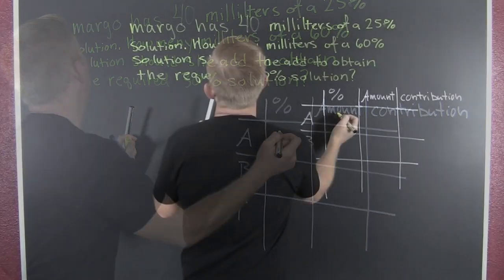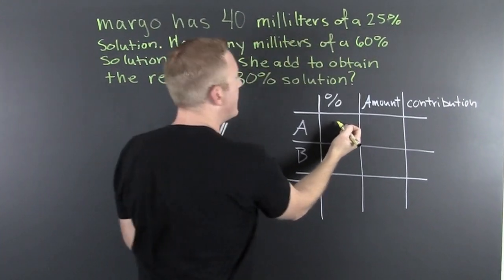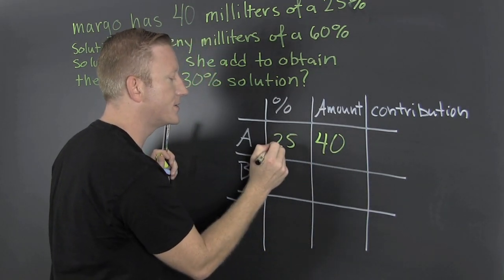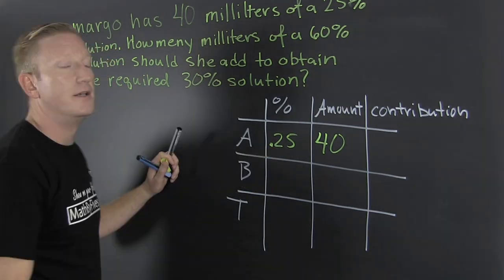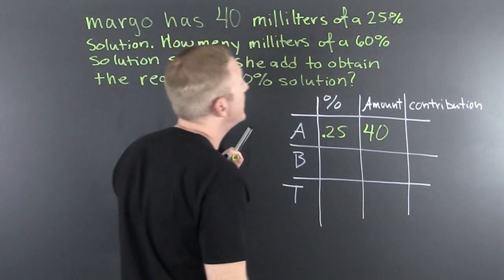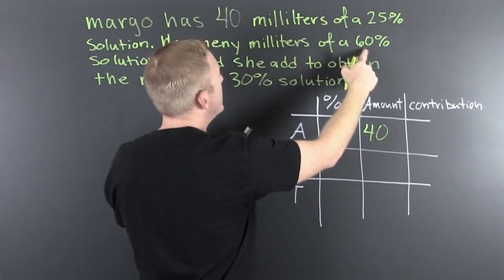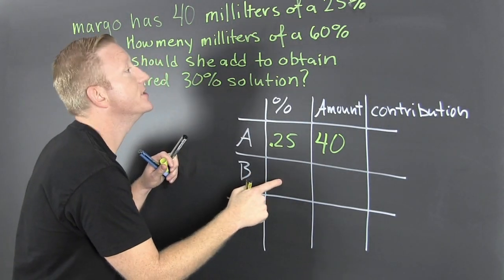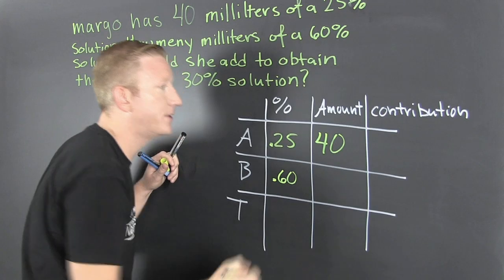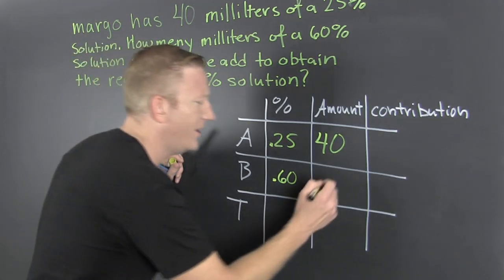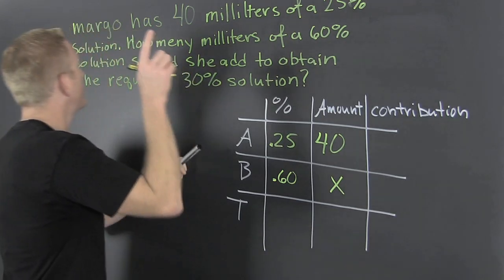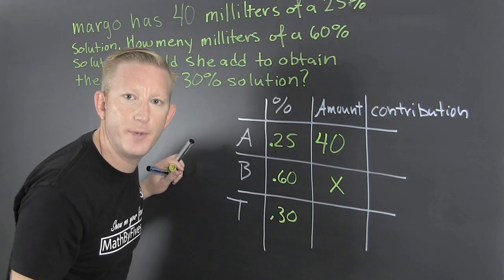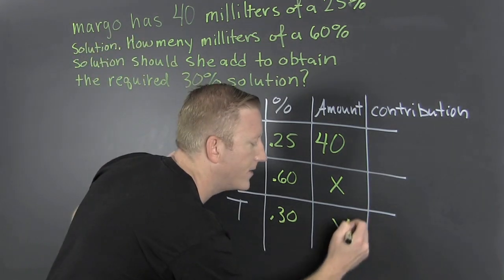Let's start. Margo has 40 milliliters of a 25% solution — that's how we write decimals as percents. She's adding a 60% solution, but we don't know how much, so put X there. A 30% solution is required, but how much of that? We don't know — let's call that Y.